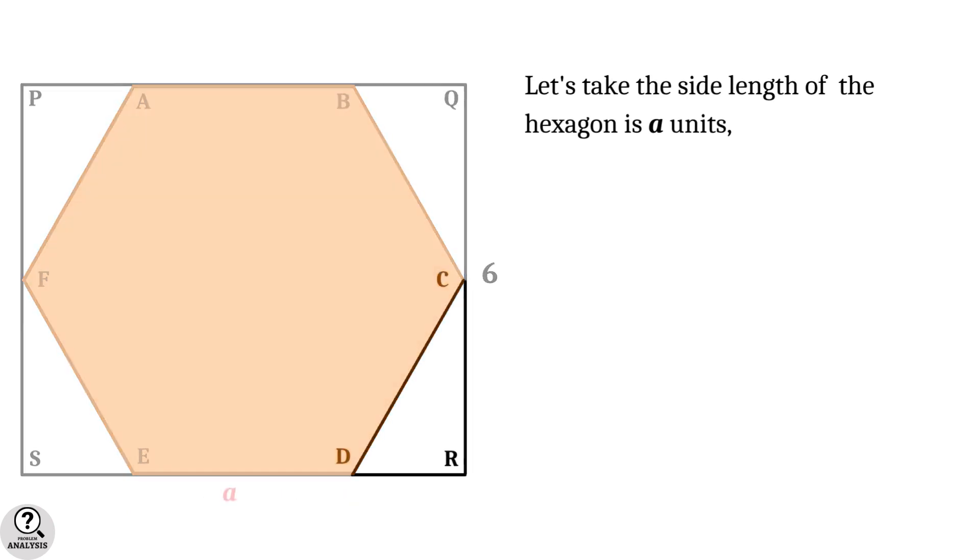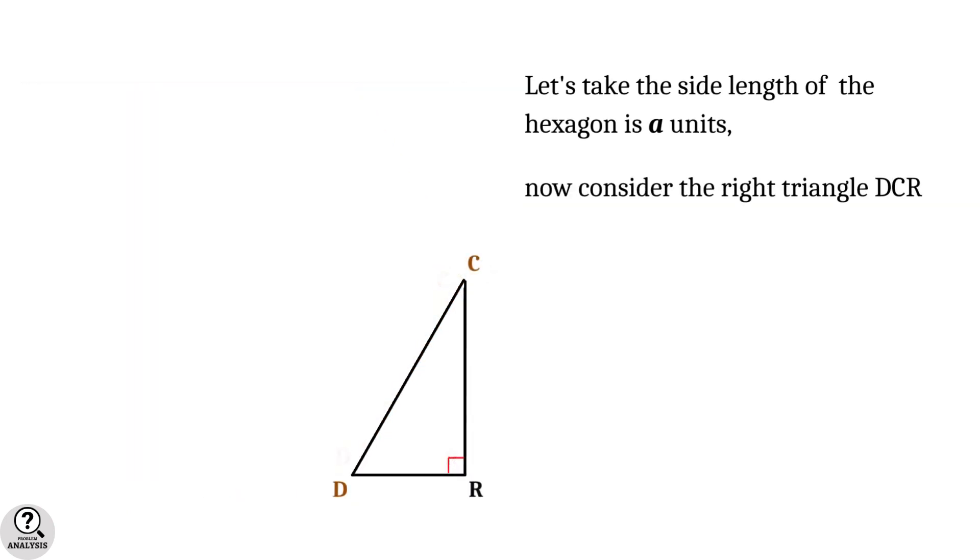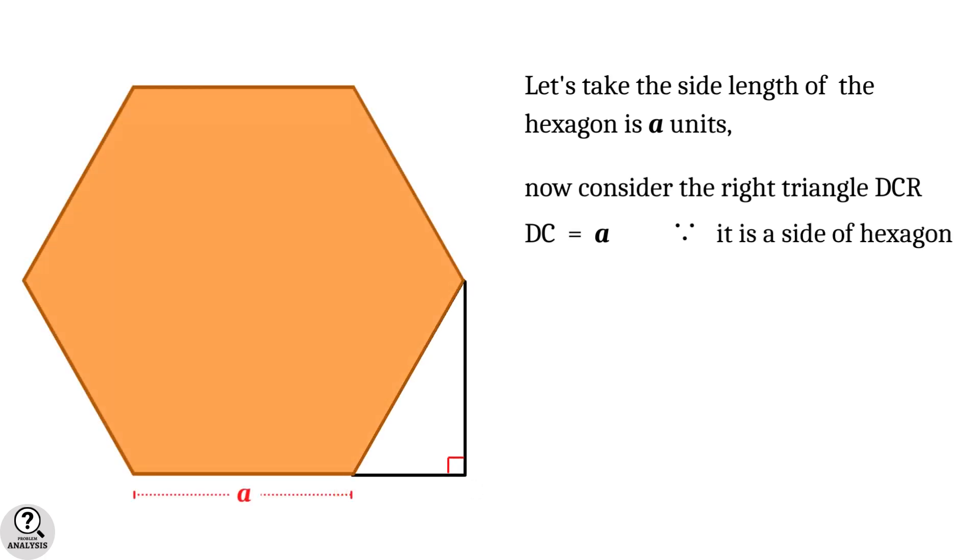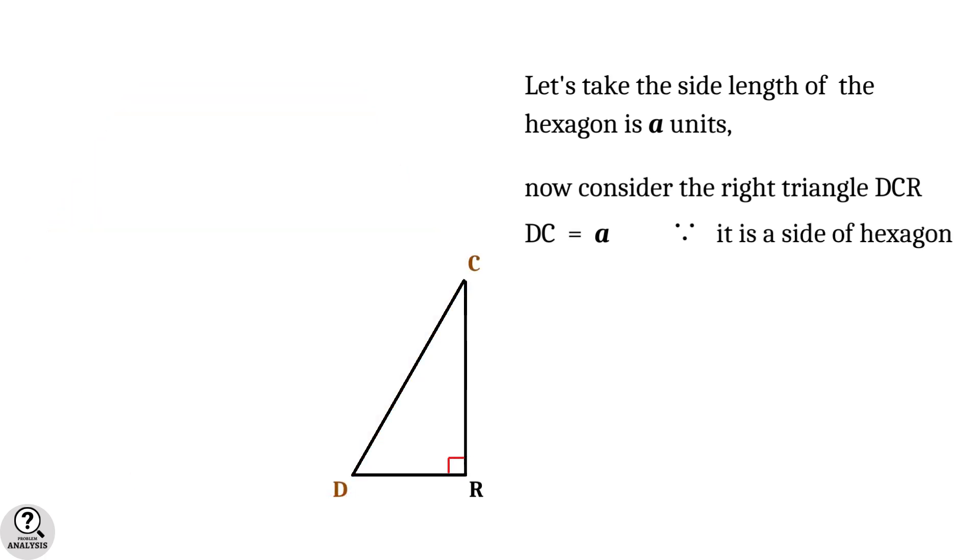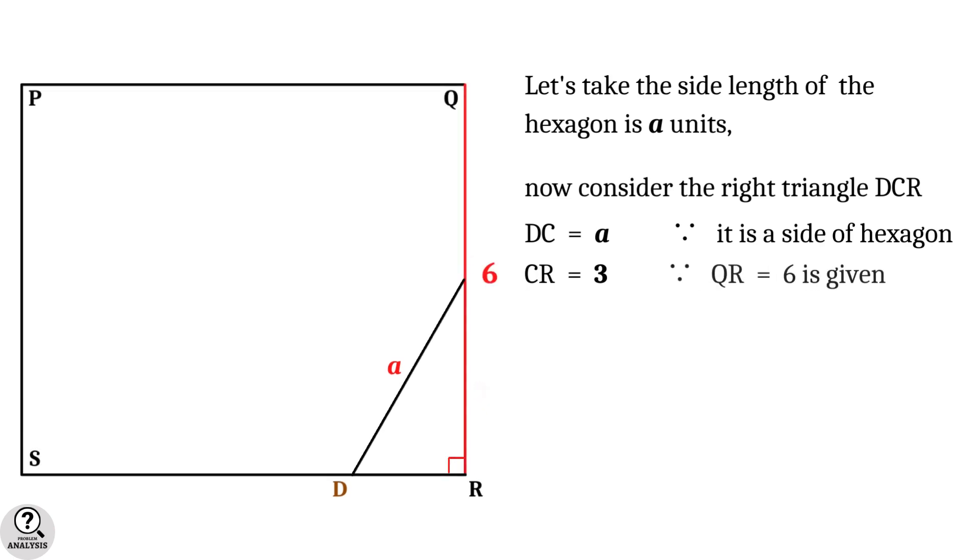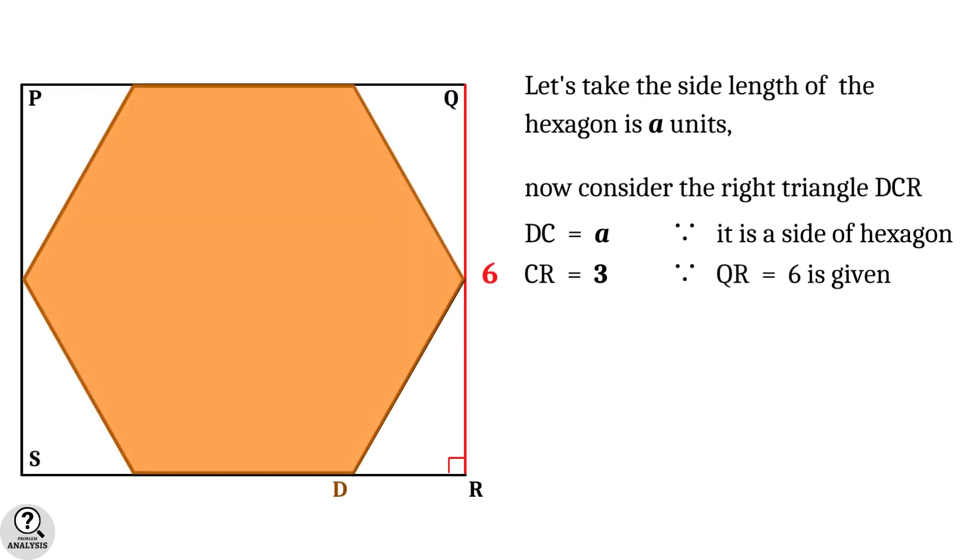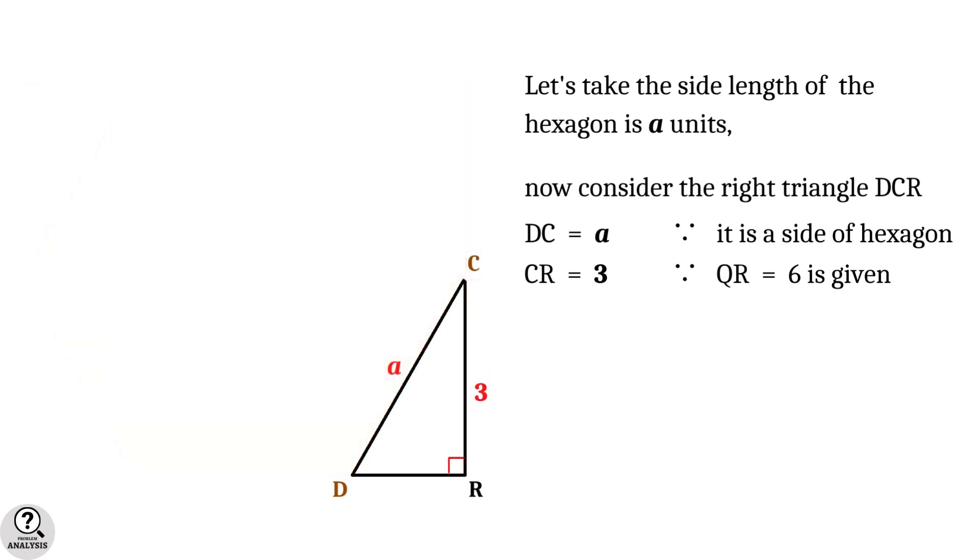Now consider the right triangle DCR. The side DC equals a units, since it is a side of the hexagon. Side CR equals three units, since QR equals six units, and due to the symmetry of the shape it will split into three and three units each.